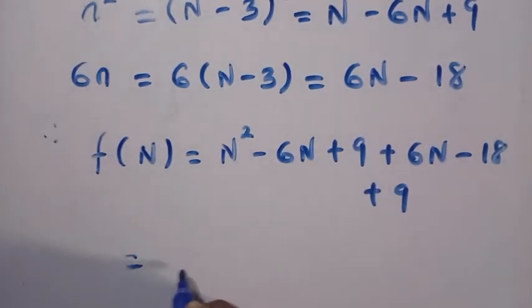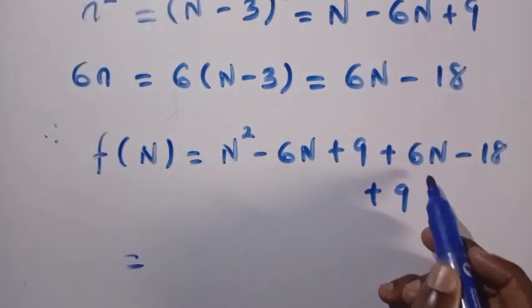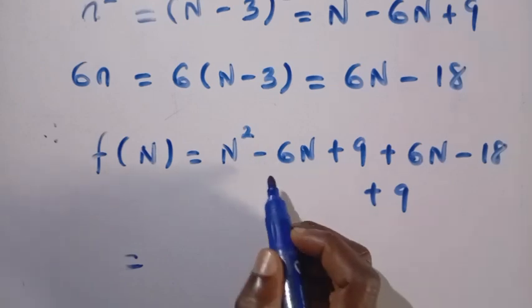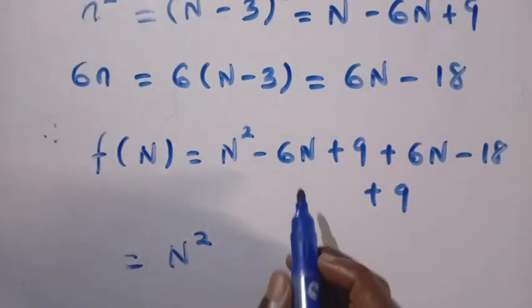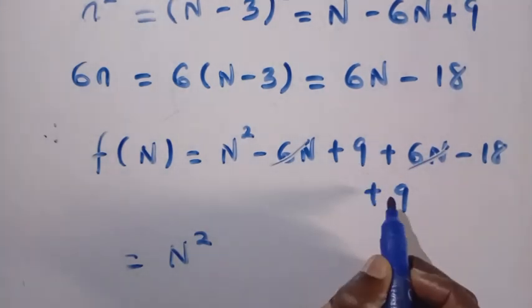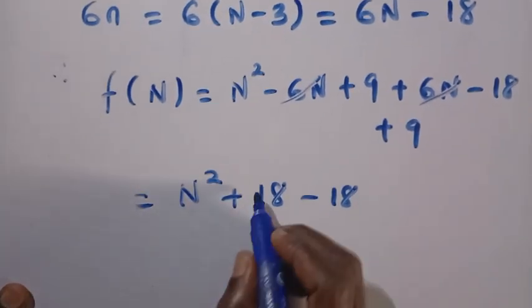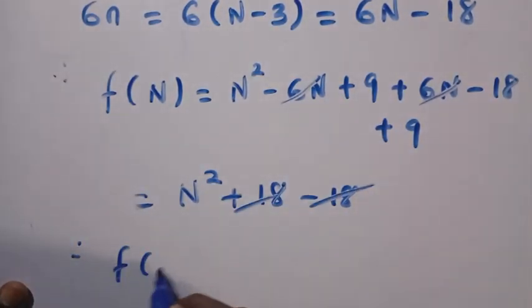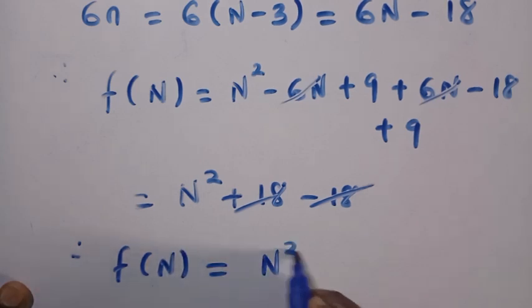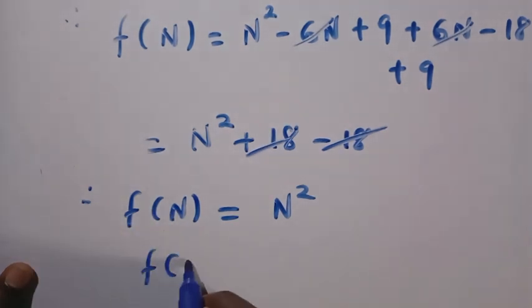So after having these expressions, we are going to continue by canceling what is necessary to cancel. Here we have +6N and -6N, so we have N², plus 6N - 6N cancel each other. Here we have 9 + 9 - 18. 9 + 9 is 18, and 18 - 18 gives us 0. Therefore, f(N) = N², and by replacing capital letter N with small letter n, we have f(n) = n².